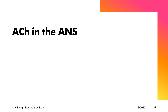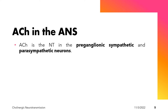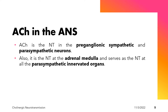Acetylcholine is considered to be the neurotransmitter in the preganglionic sympathetic and parasympathetic neurons — we also call this the autonomic ganglia. It is also the neurotransmitter at the adrenal medulla, which is considered to be an exception. Although it has a sympathetic innervation, instead of releasing norepinephrine at its junction, it releases the neurotransmitter acetylcholine.